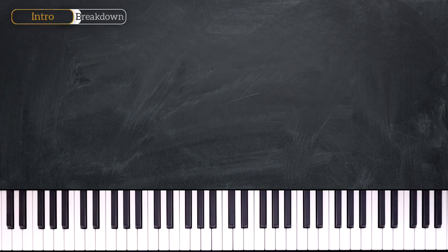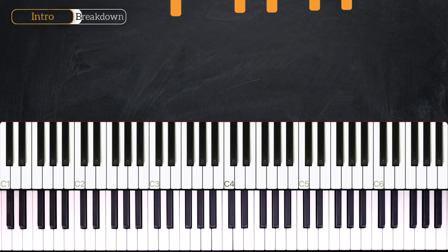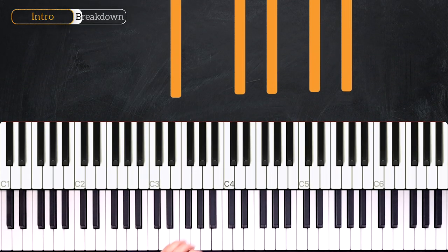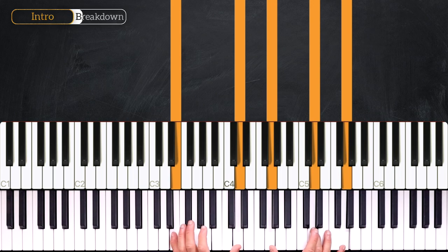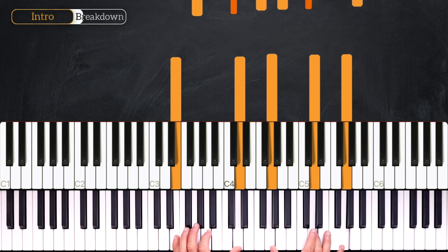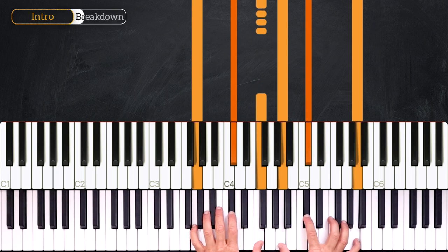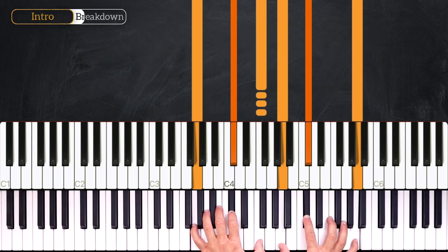All right, so let's repeat the chords together. We start on the C6 add 9, so here we are on the first degree. Then we play the A7 flat 13. Here is the 13th.